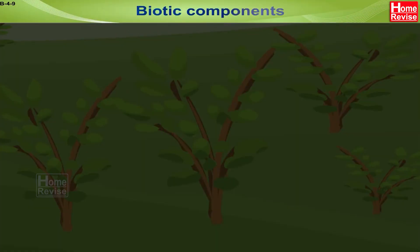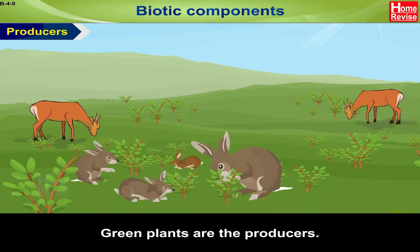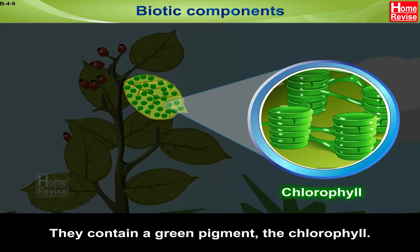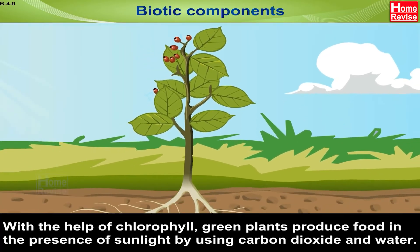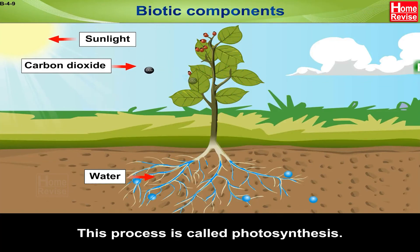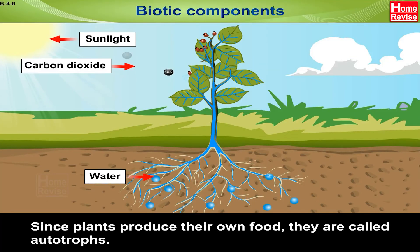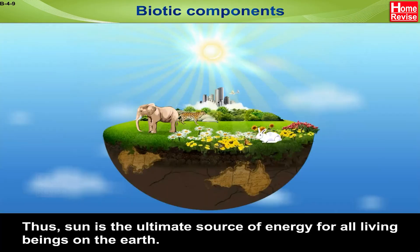Biotic components — Producers: Green plants are the producers. They contain a green pigment called chlorophyll. With the help of chlorophyll, green plants produce food in the presence of sunlight by using carbon dioxide and water — this process is called photosynthesis. Since plants produce their own food, they are called autotrophs. The sun is the ultimate source of energy for all living beings on Earth.